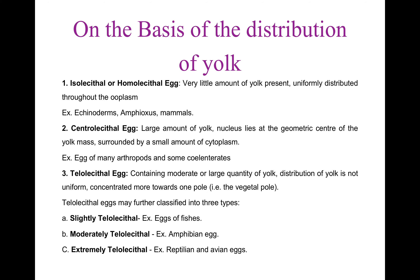Eggs can also be classified on the basis of distribution of yolk. First, Isolecithal Eggs, which are also known as Homolecithal Eggs. They have very little amount of yolk present, but yolk is uniformly distributed throughout the ooplasm. This type of eggs are present in Echinoderms, Amphioxus, and Mammals. Now, Centrolecithal Eggs. These eggs have a large amount of yolk. The nucleus of this egg lies at the geometric center of the yolk mass, which is surrounded by a small amount of cytoplasm. This type of eggs are present in Arthropods and some Coelenterates.